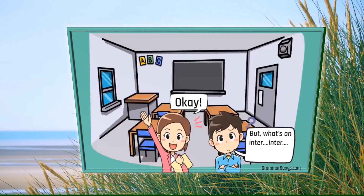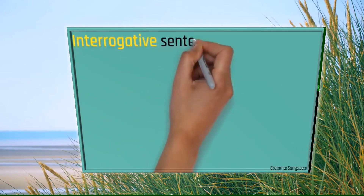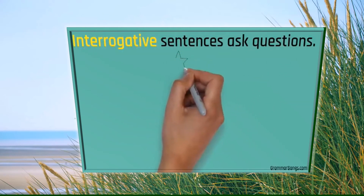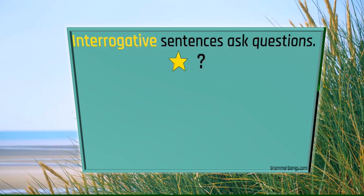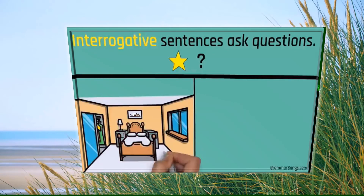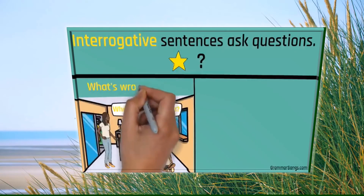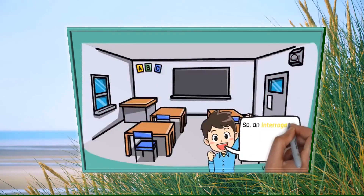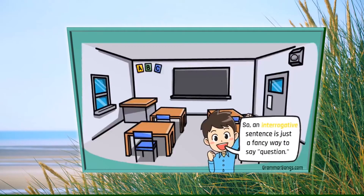What is an interrogative sentence? Believe it or not, you just used an interrogative sentence when you asked that question. Interrogative sentences ask questions. A big clue is that interrogative sentences always end with a question mark. For example, 'What's wrong, Sasha?' or 'Should we have pie for dessert?' So an interrogative sentence is just a fancy way to say question.